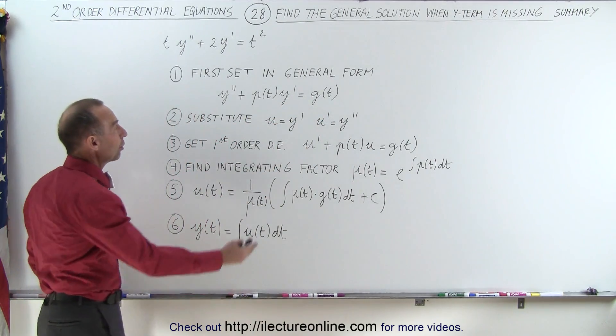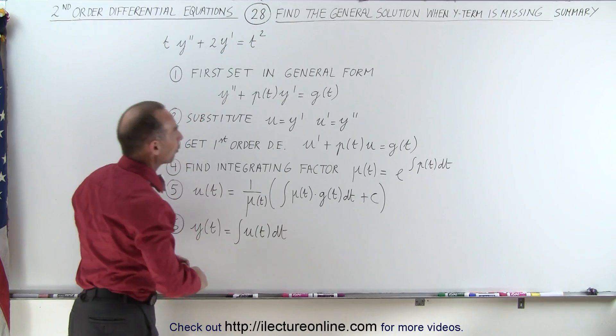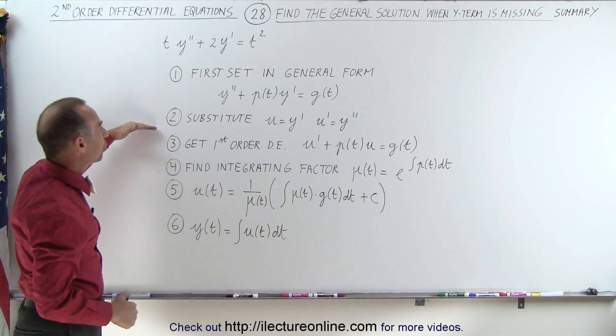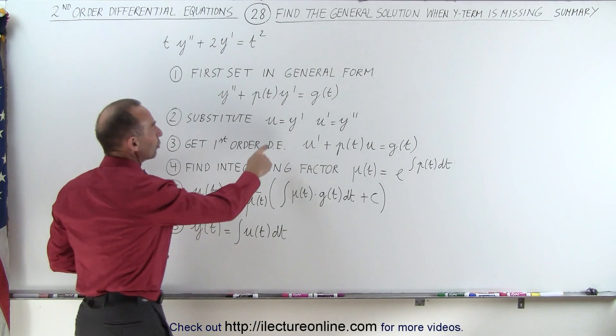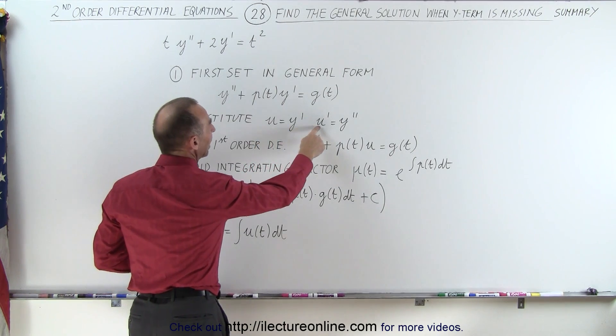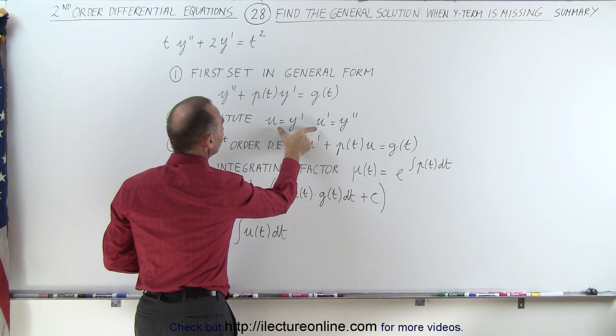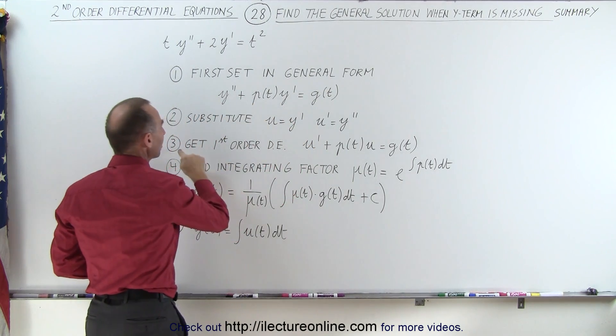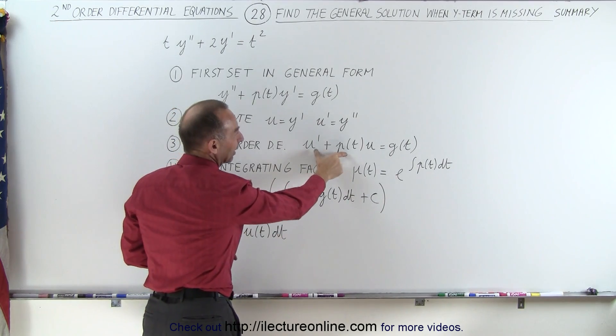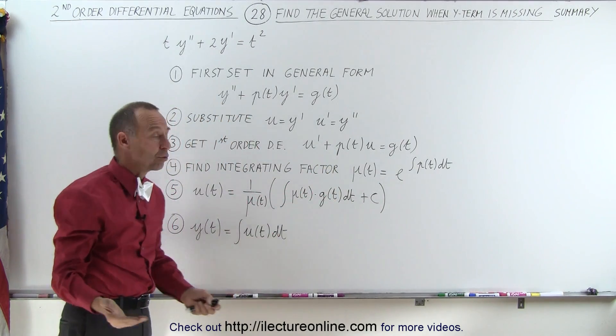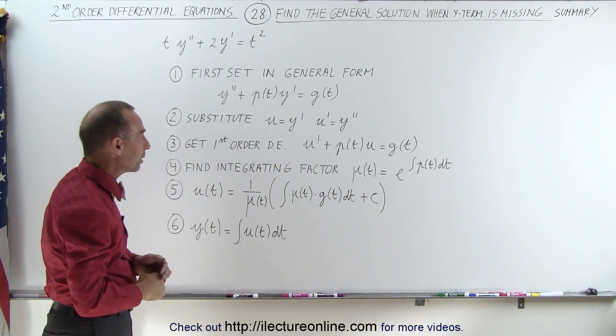This is the most general case where we have non-constant coefficients. We then substitute, because we're trying to get a first-order differential equation, we let u equals y prime and u prime equals y double prime. Substituting those into the equation, we end up with a first-order differential equation that looks like this. Again, we have non-constant coefficients for which this method is really good.